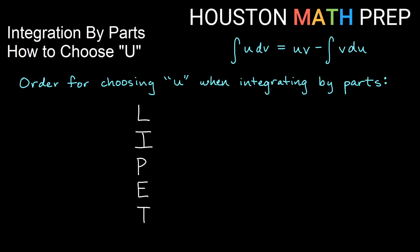We have our system which we call LIPET here, L-I-P-E-T. That tells us the order of preference for how we choose U between U and DV when we're integrating by parts.